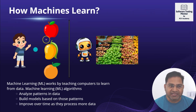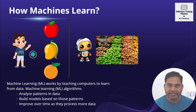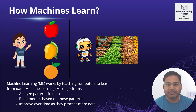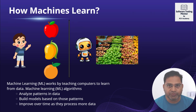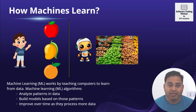To understand how machines learn, consider a human analogy: as a child, we were shown fruits repeatedly, and our brain got wired to recognize that this is an apple, this is a mango, this is an orange. By seeing different kinds of apples, our learning enabled us to identify fruits regardless of color or variety — that's how human beings learn.